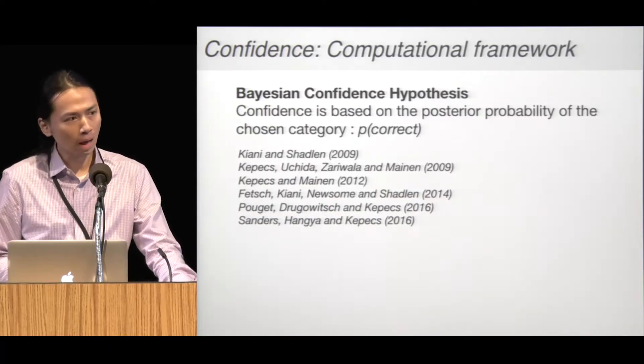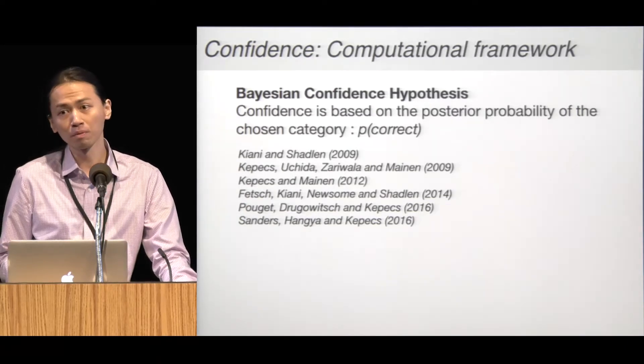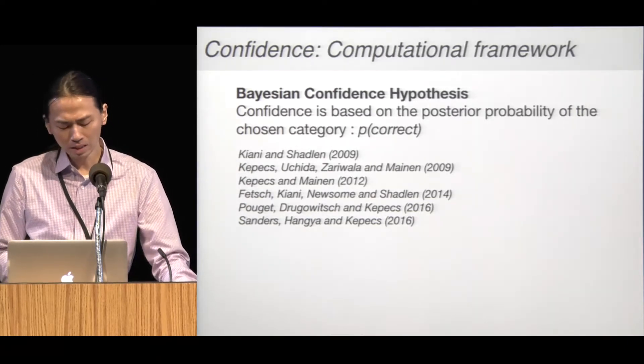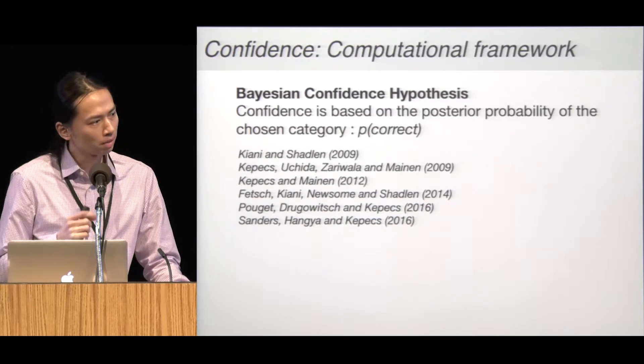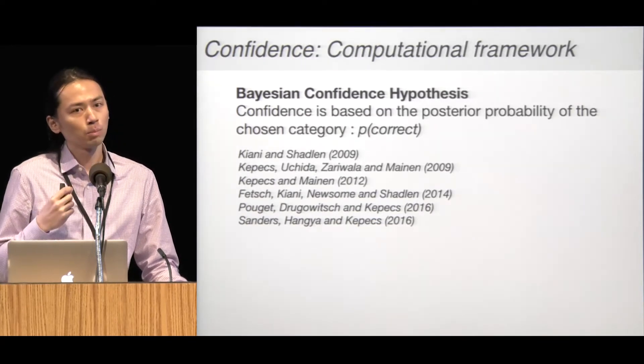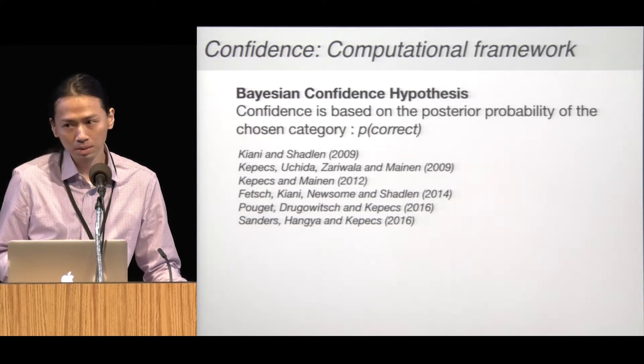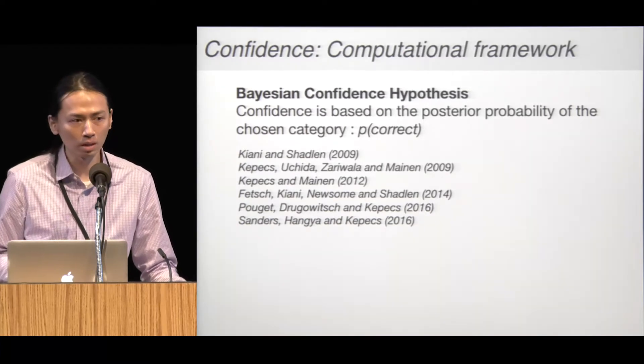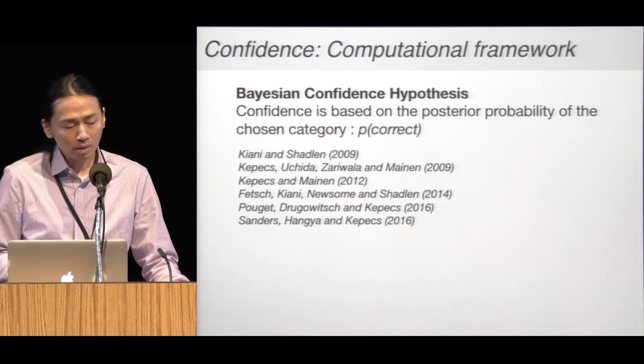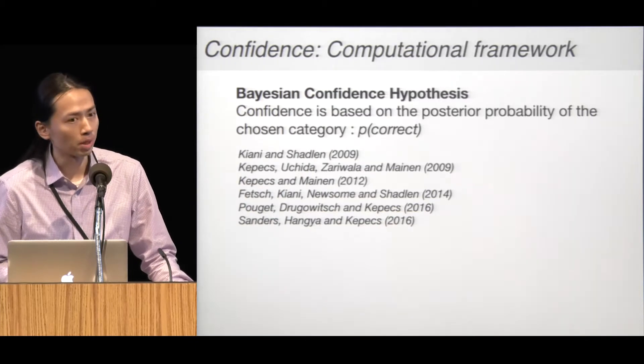It is still an open question how human observers compute confidence when they are asked about it. It's often postulated that confidence tracks the probability a decision is correct, meaning the posterior probability of the chosen category. We call this idea Bayesian confidence hypothesis.